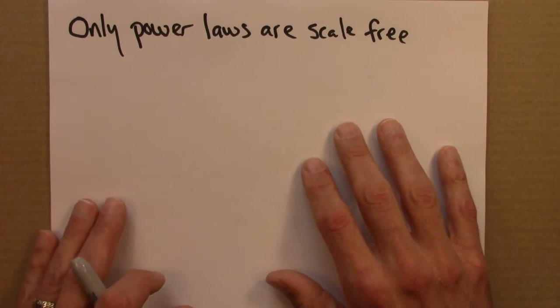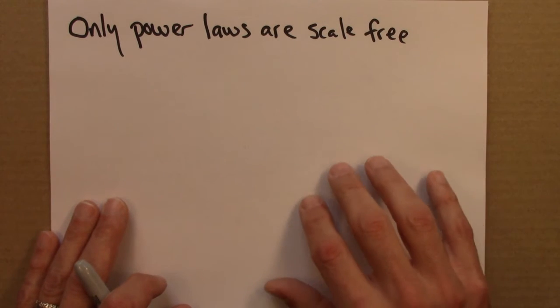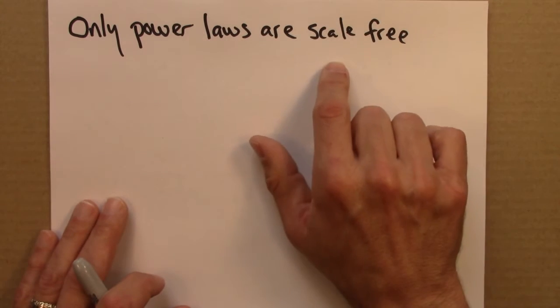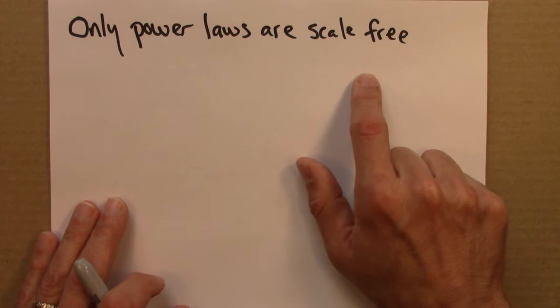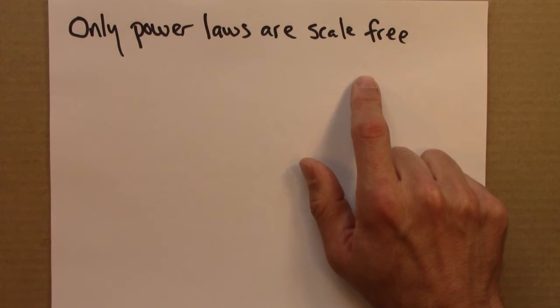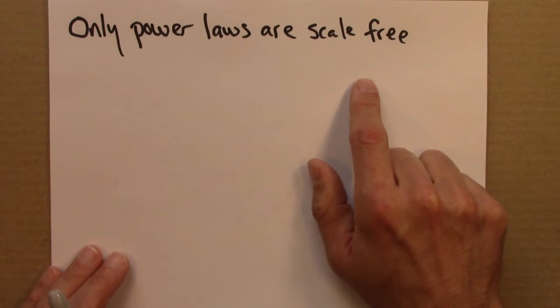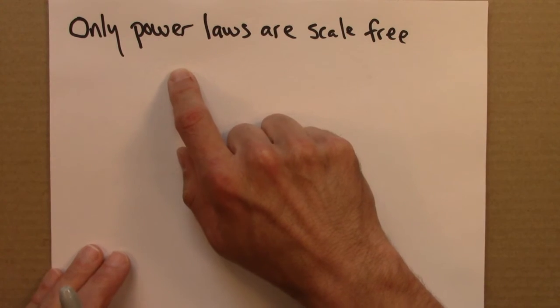But it's a nice piece of math, and it establishes something important, which is that we've seen that power laws are scale free. But the arrow goes in the other direction. If you see mathematical behavior that's scale free, it has to be described by a power law.